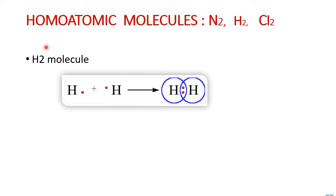Some more examples of Homoatomic molecules: Nitrogen N2 — the two same nitrogen atoms share their electrons to form the N2 molecule. Likewise, hydrogen — each hydrogen atom has one electron and they share one pair of electrons to form a hydrogen-hydrogen single bond. Likewise, Chlorine — the two combining atoms are of the same type, same chlorine atom, and hence all these three are examples of Homoatomic molecules.